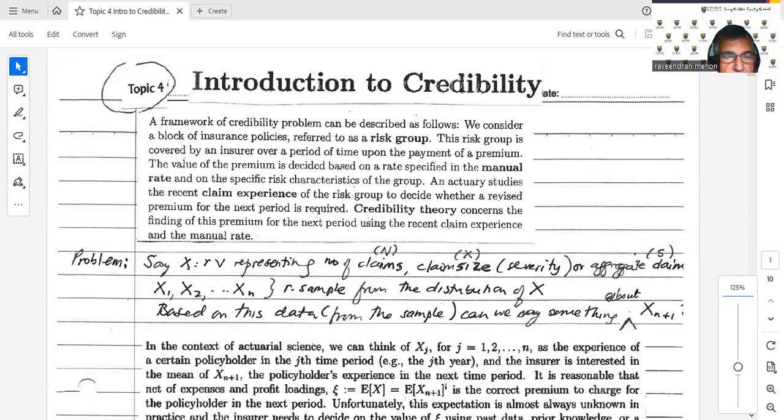Topic 4, Introduction to Credibility. Let's read or go through the first paragraph. A framework of the credibility problem can be described as follows: We consider a block of insurance policies referred to as a risk group.